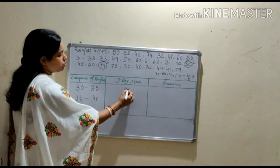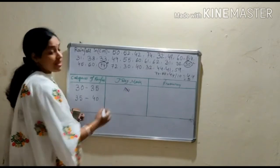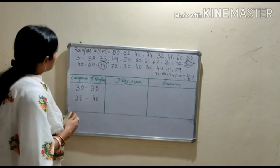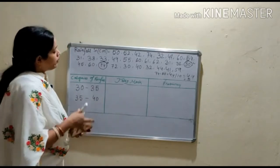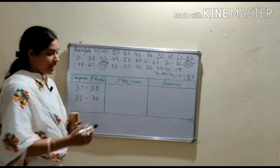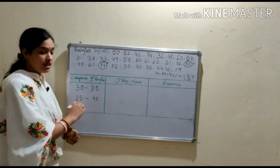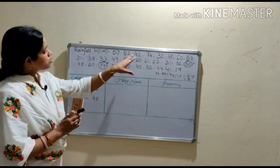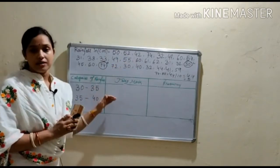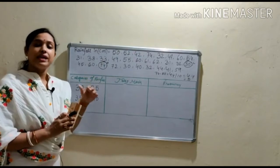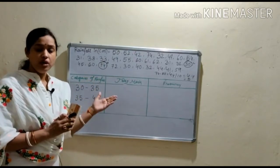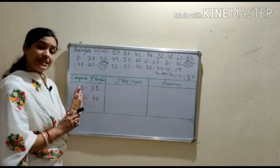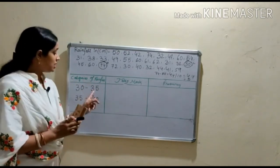So now we have to include here, that means in our first section, 30 to 35, we have to include the values from this raw data. The values included in this section will be more than 30 but less than 35.